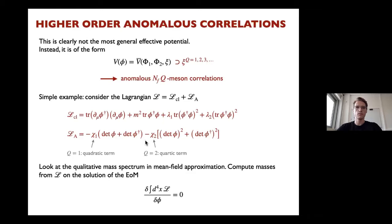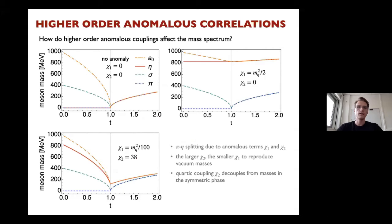There is an anomalous part where I introduce the ordinary 't Hooft determinant with coupling χ₁, and also a squared term with coupling χ₂. Then I look at the mass spectrum by solving the classical equations of motion in a simple mean-field approximation. Here I show the meson masses as a function of reduced temperature.